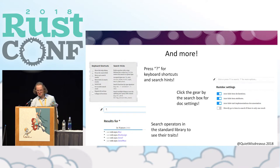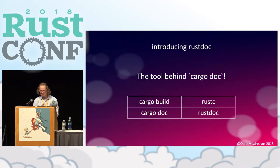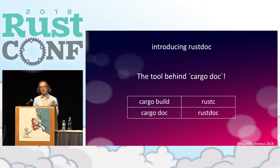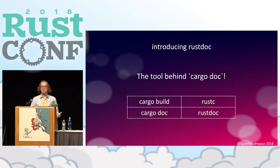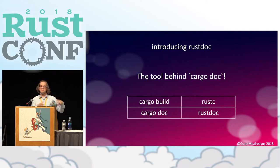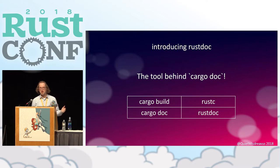When you run Cargo Doc, much like when it compiles your code with Cargo Build or Cargo Run, Cargo just shells out to another tool that comes with the Rust distribution. That tool is called Rustdoc. So much like when you run Cargo Build it builds up a command to rustc the compiler, when you run Cargo Doc it builds up a command to Rustdoc so that it can create your documentation.